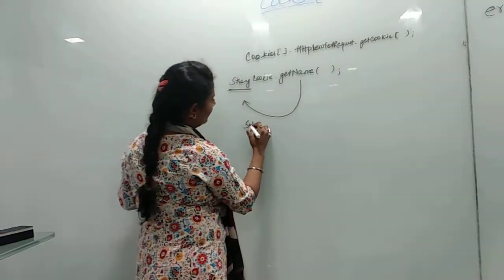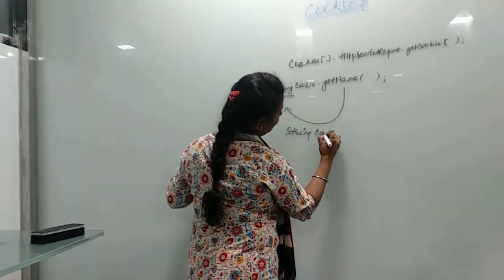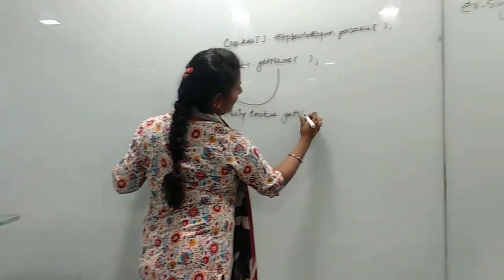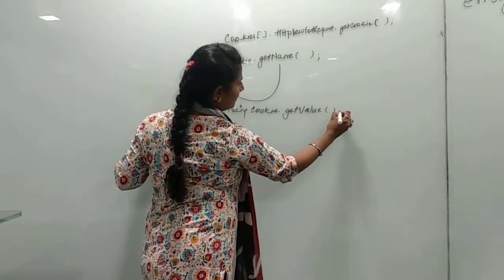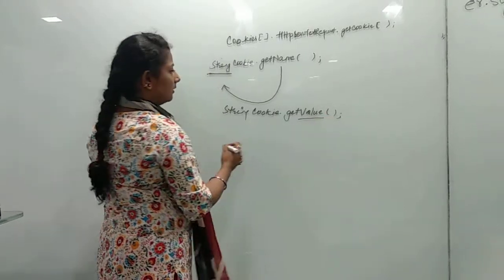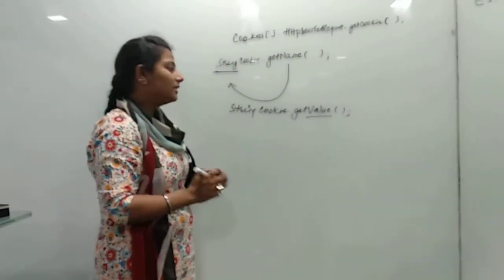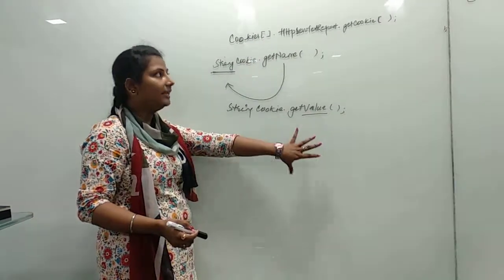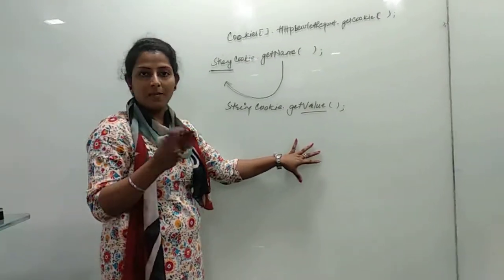Another method we have is string cookie.getValue. Again, this getValue is used to get the value. As I have already mentioned, that cookie is in the form of name and value.